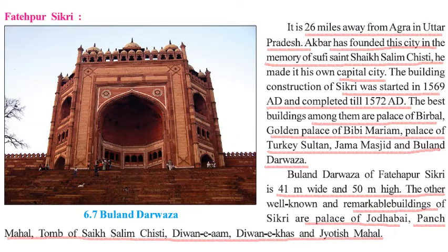Fatehpur Sikri is a city located about 26 miles from Agra in Uttar Pradesh. Akbar founded this city in memory of Sheikh Salim Chishti and made it his capital. Construction of Sikri started in 1569 and was completed by 1572. The best buildings of this city include the Palace of Birbal, the Golden Palace of Bibi Mariam, the Palace of Turkish Sultan, Jama Masjid, and the Buland Darwaza — which is 41 meters wide and 50 meters high. Other notable buildings include the Palace of Jodhabai, Panch Mahal, Tomb of Sheikh Salim Chishti, Diwan-e-Aam, Diwan-e-Khas, and Jodesh Mahal.